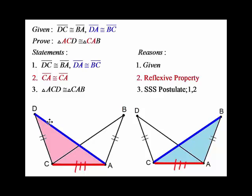You can see we've got one side and another — two sides that are corresponding and congruent. These two triangles also share the line segment CA. By the reflexive property, CA is congruent to itself, which gives us the third side.